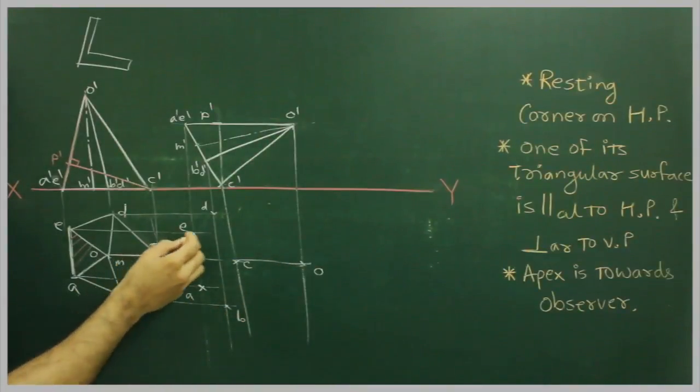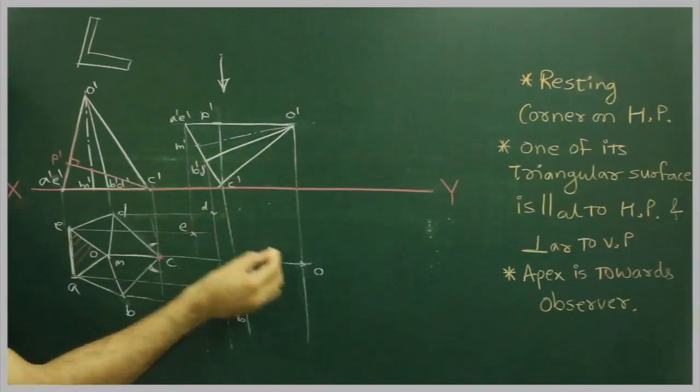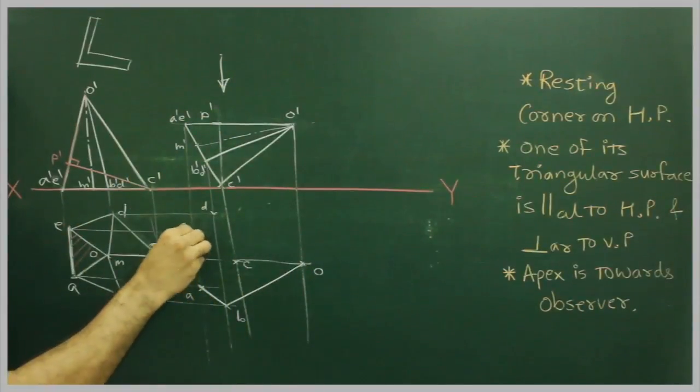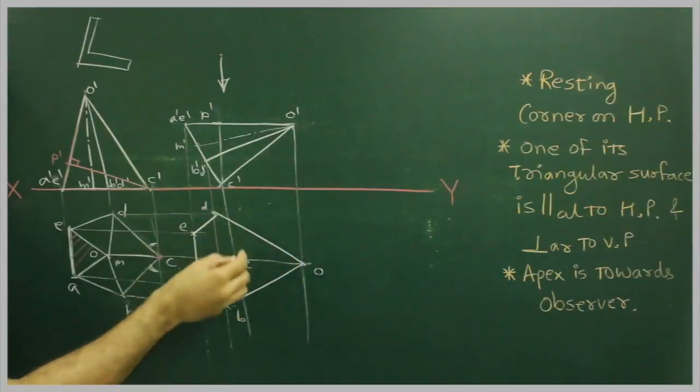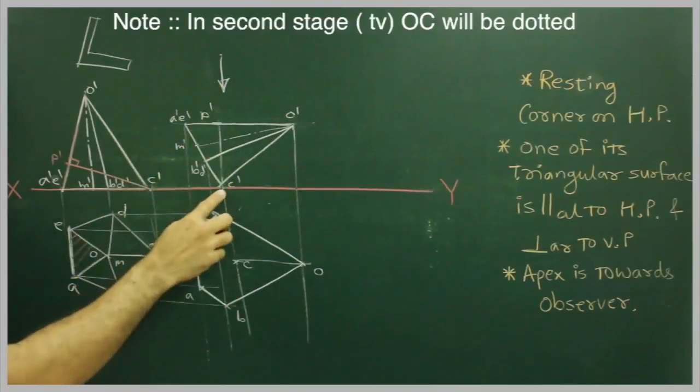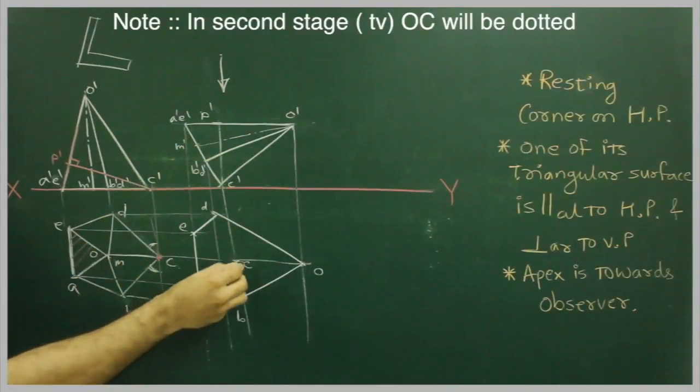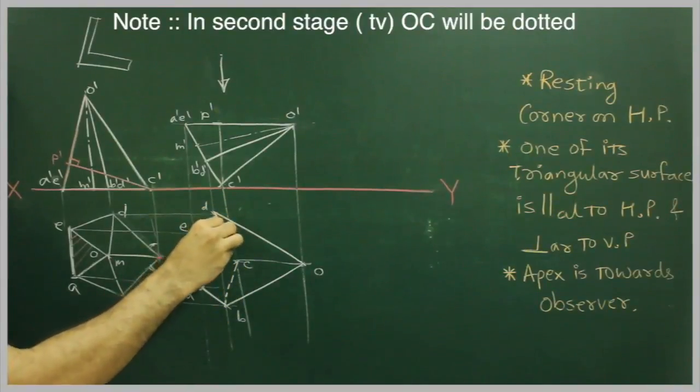Then again the observer will see from the top, extreme boundary will be down. Now when observer will see from the top, C' is away, so C' to D' will be dotted. C' to D' will be dotted.